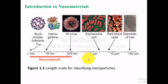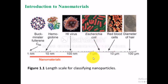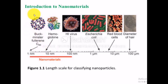Figure 1.1 shows a length scale for classifying nanomaterials. On the right-hand side we can see the diameter of a hair at 100 micrometers. Moving to smaller sizes: red blood cells are around 10 micrometers, E. coli is 1 micrometer, HIV viruses are 100 nanometers, a molecule of hemoglobin is 10 nanometers, and Buckminster fullerene — a carbon compound of 60 interconnected carbon atoms forming a cage structure — is 1 nanometer in size.